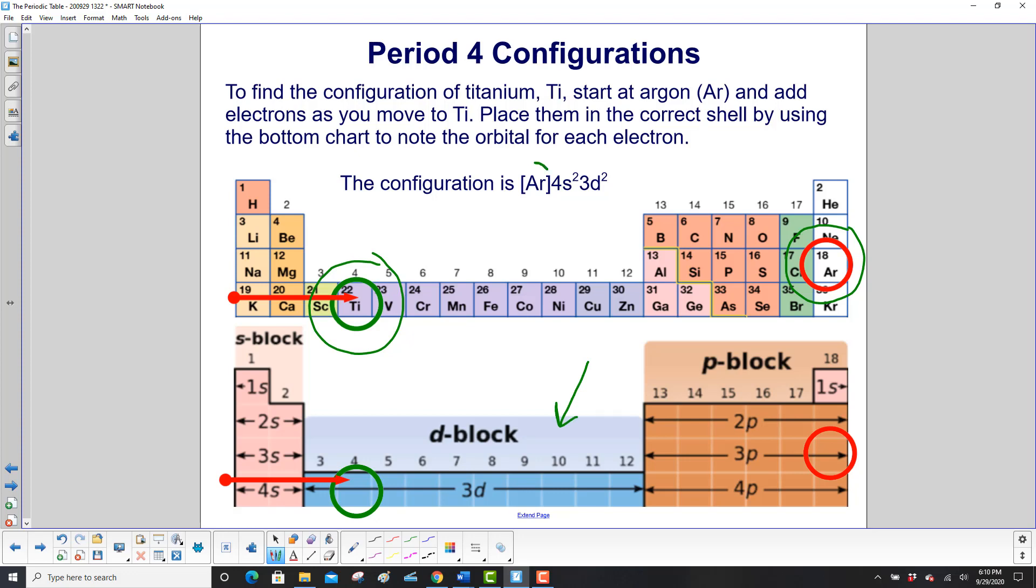So we start with the noble gas in the period above, and that's argon in brackets. Then we come down over here and we go until we hit titanium. So we have 4s2, and then we count over two electrons in the 3d shell. So that's going to be 3d2.